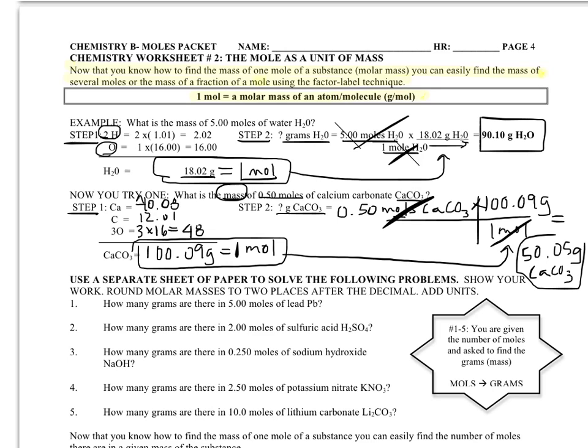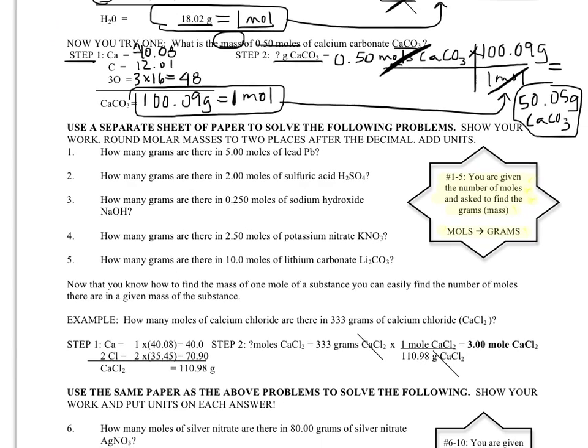That would be my final answer. So these are two examples that will help you with problems 1 through 5 when you get to class. Notice that in all of the problems 1 through 5, you are given the number of moles and asked to find the grams, in other words, the mass. So you are going from moles to grams each time. So your final answer is always going to have units of grams.